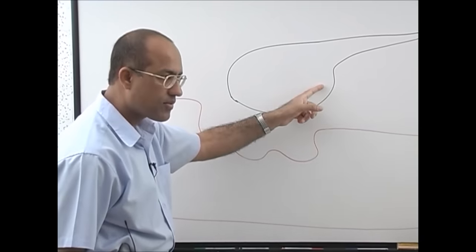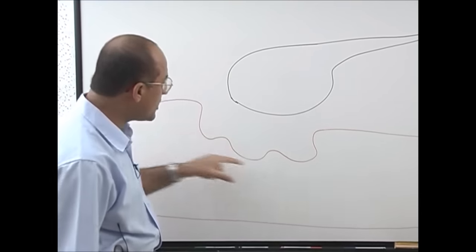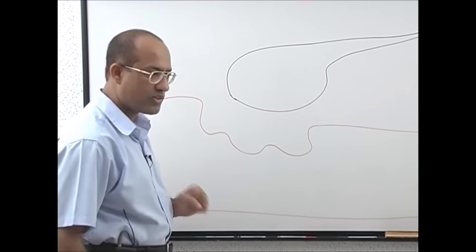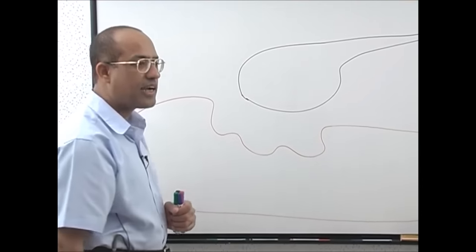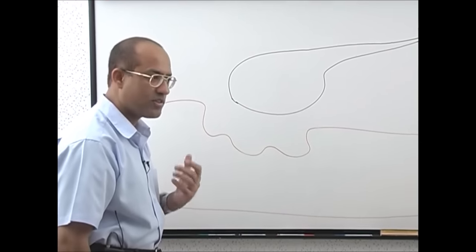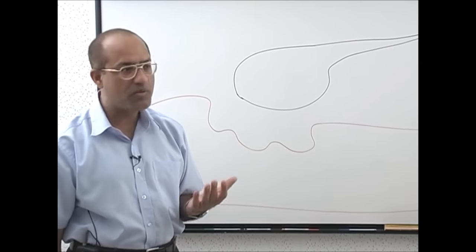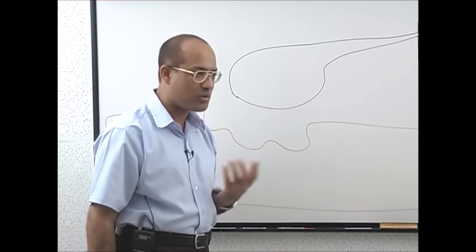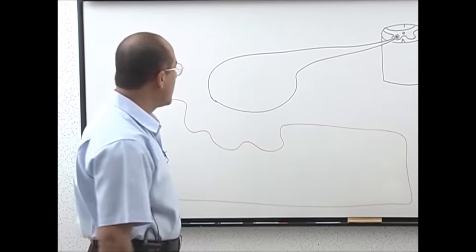The area where the motor nerve ending and the motor end plate come together is called the neuromuscular junction. At neuromuscular junctions, neuromuscular transmission occurs. Simply put, we are discussing how motor neurons talk to the muscles so that muscles contract — that is today's work.